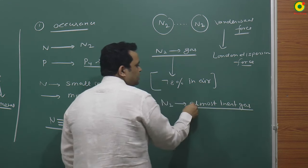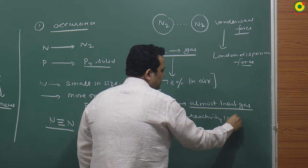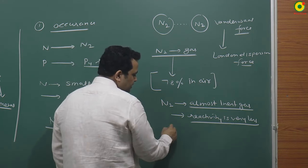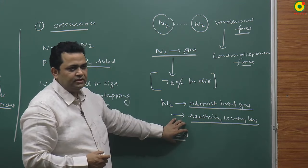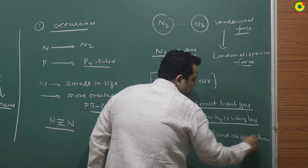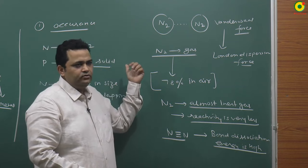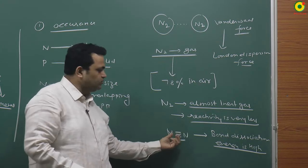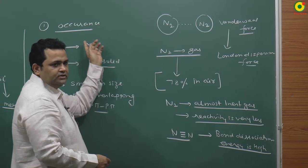Nitrogen is almost inert because its reactivity is very low. The reason is the N≡N triple bond - to make nitrogen reactive, this bond must be broken. Because of the triple bond, bond dissociation energy is very high. So nitrogen's most stable form in nature is N2 (gas), due to van der Waals/London dispersion forces, and its low reactivity is due to the high bond dissociation energy required to break the triple bond.